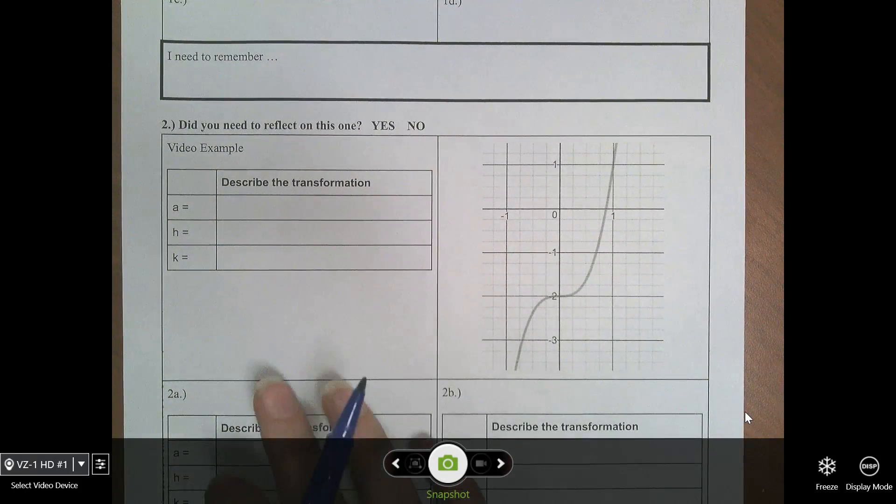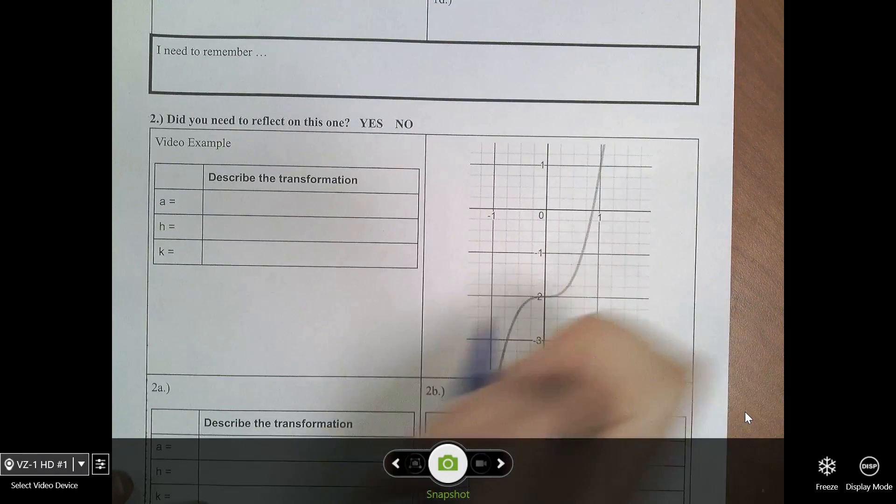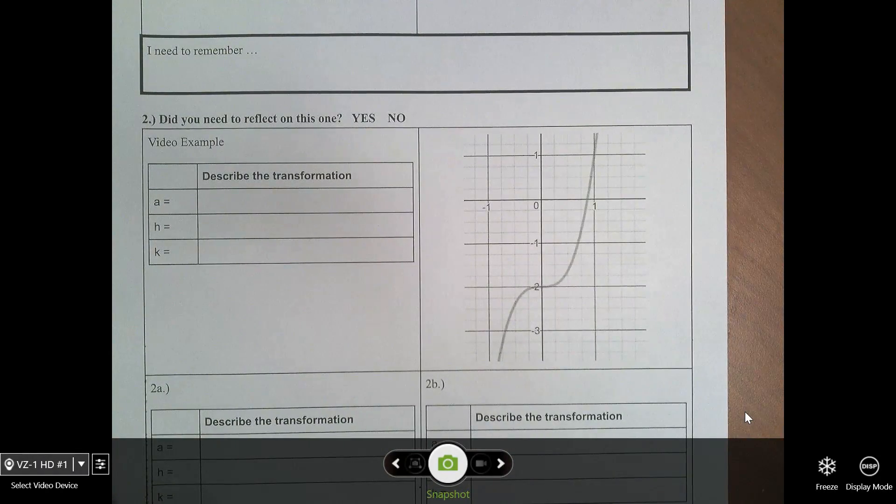Okay, we're going to go through this example, so have your example pulled out. We're going to name a, h, and k from a graph, which is essentially what you needed to do for problem number two.